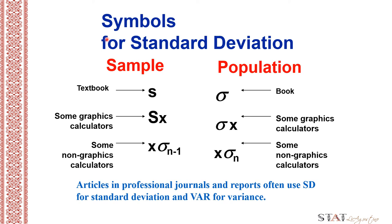These are the symbols for standard deviation. For sample standard deviation, some textbooks use s; for population, sigma. Some graphing calculators use sx and sigma-x respectively, while some non-graphing calculators use the notation sigma with subscript n minus 1. The n minus 1 subscript signifies the sample, because in the denominator we have n minus 1 as our degrees of freedom.